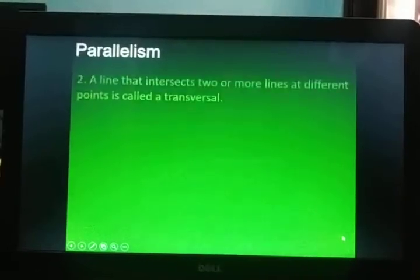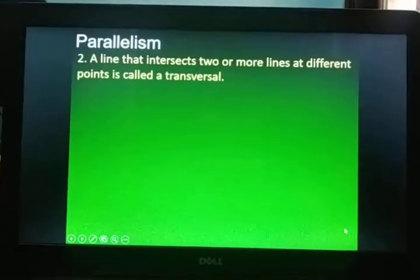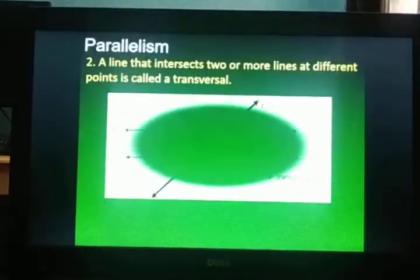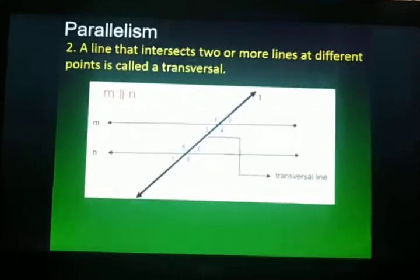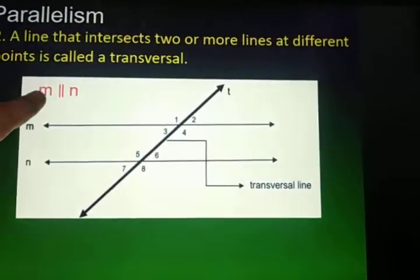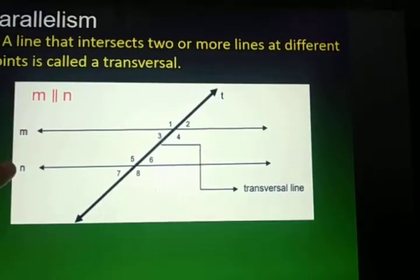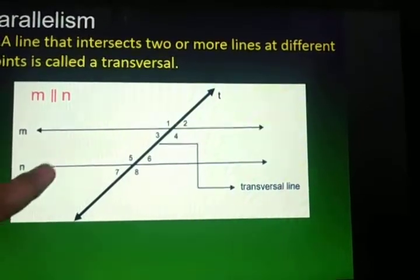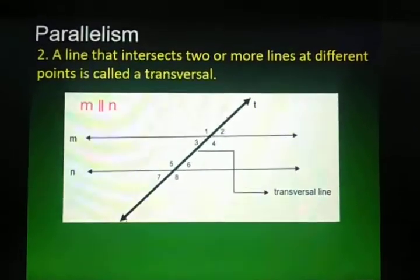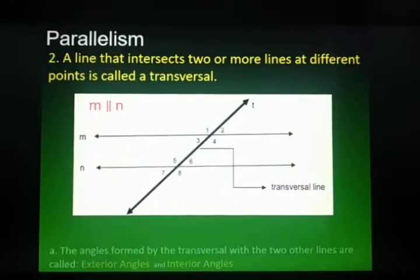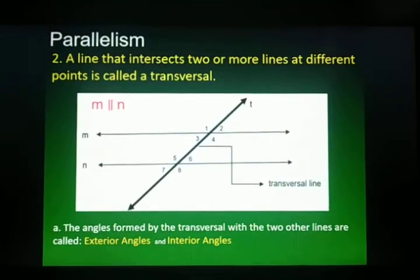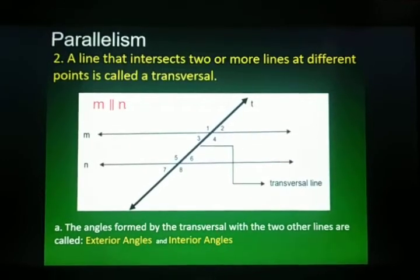A line that intersects two or more lines at different points is called a transversal. When parallel lines are cut by a transversal — as we can see here, line M is parallel with line N, cut by transversal line T — there are angles formed. The angles formed by the transversal with the two other lines are called exterior angles and interior angles.